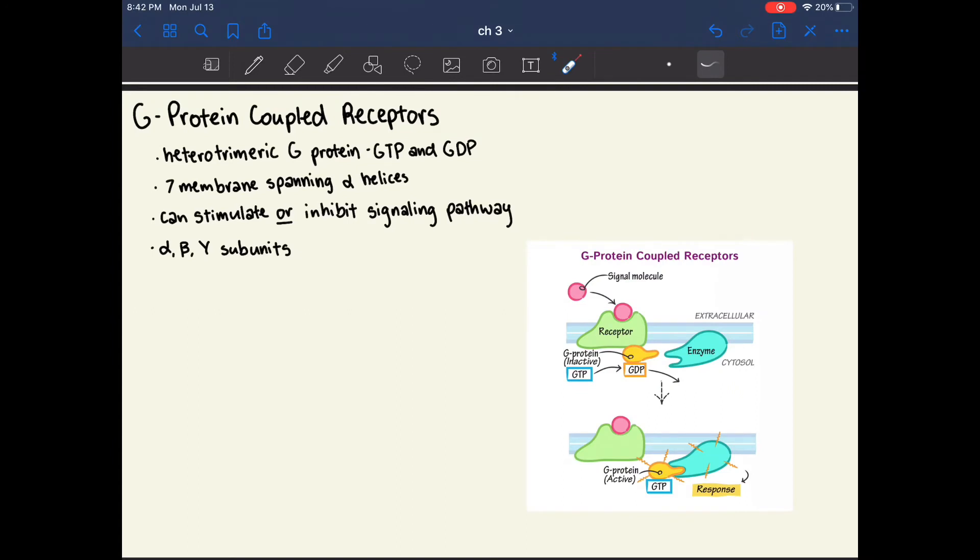An important class of membrane receptors are the G-protein coupled receptors. These are named because they utilize a G-protein, which is capable of binding GTP and hydrolyzing it to GDP. It's easy to spot a G-protein coupled receptor because they'll have seven membrane-spanning alpha helices.